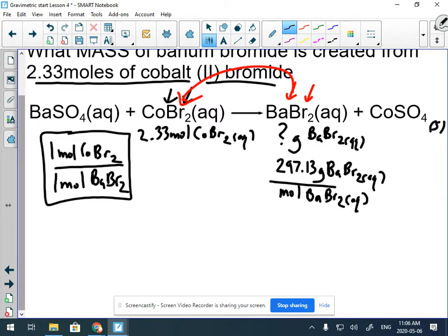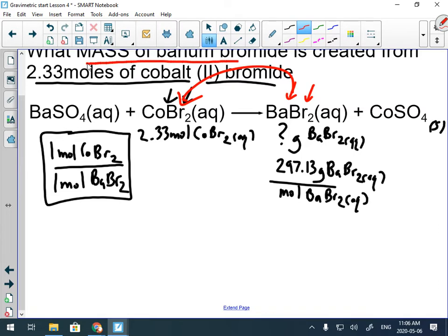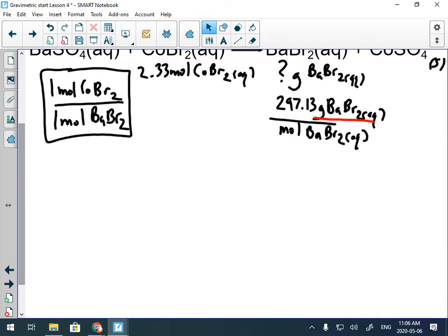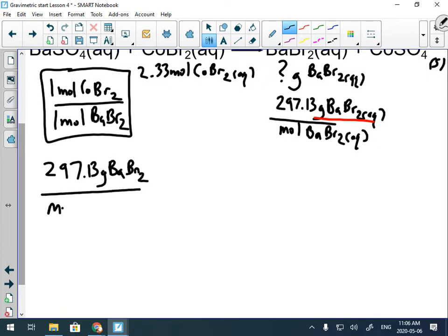One mole cobalt bromide for every, this is a one-to-one thing, one mole barium bromide. You got to love it when it's one-to-one because it doesn't change the math at all, because a one over a one doesn't change your math, but you need those units to cancel out for the first unit analysis. Just like the last video, we have to start with the variable that the question's asking us to solve for. It's asking us to solve for mass barium bromide. So we try and find the mass. There it is.